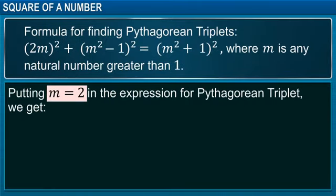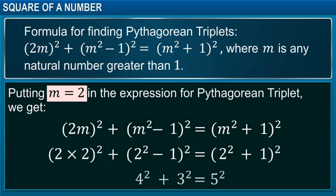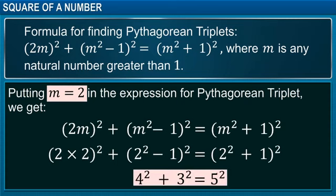Putting m equal to 2 in the expression, we get Pythagorean triplet 3, 4 and 5.